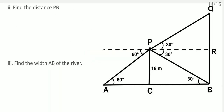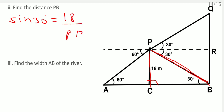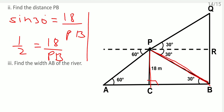Find distance PB. In triangle PCB, the opposite side is 18 metres and PB is the hypotenuse, with the angle being 30 degrees. Using sine 30 equals 18 by PB: 1 by 2 equals 18 by PB. Cross-multiplying gives PB equals 36 metres.